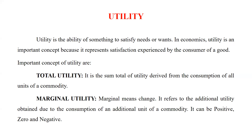Important concepts of utility: number one is total utility, number two is marginal utility. Total utility means it is the sum total of utility derived from the consumption of all units of a commodity. Marginal utility means additional — marginal means change — it refers to the additional utility obtained due to the consumption of an additional unit of a commodity. It can be positive, zero, or negative.